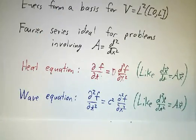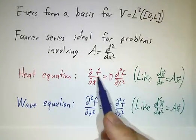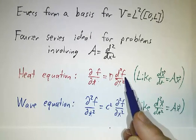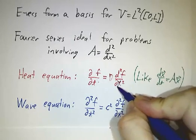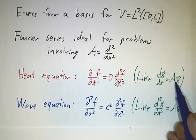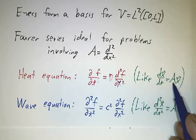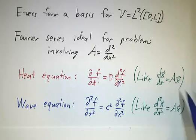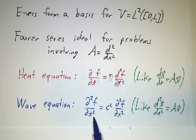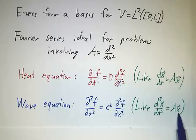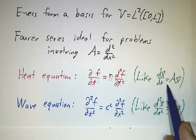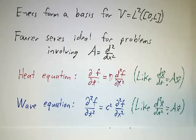Two examples we'll study in future videos: the heat equation, where the first partial derivative with respect to t equals a constant times the second derivative with respect to x — analogous to dx/dt equals Ax — and the wave equation, which has the second derivative with respect to t instead. Both work the same way: find the eigenvalues and eigenvectors and write down the solution. If you understand the finite-dimensional problems from earlier sections, you understand these infinite-dimensional ones. That's the glory of Hermitian operators, the second derivative operator, and Fourier series.